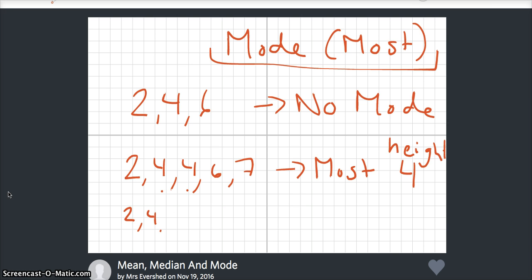If you had this, if that was your set of data, you would have two modes. The height of 4 and the height of 6 would be both our modes.